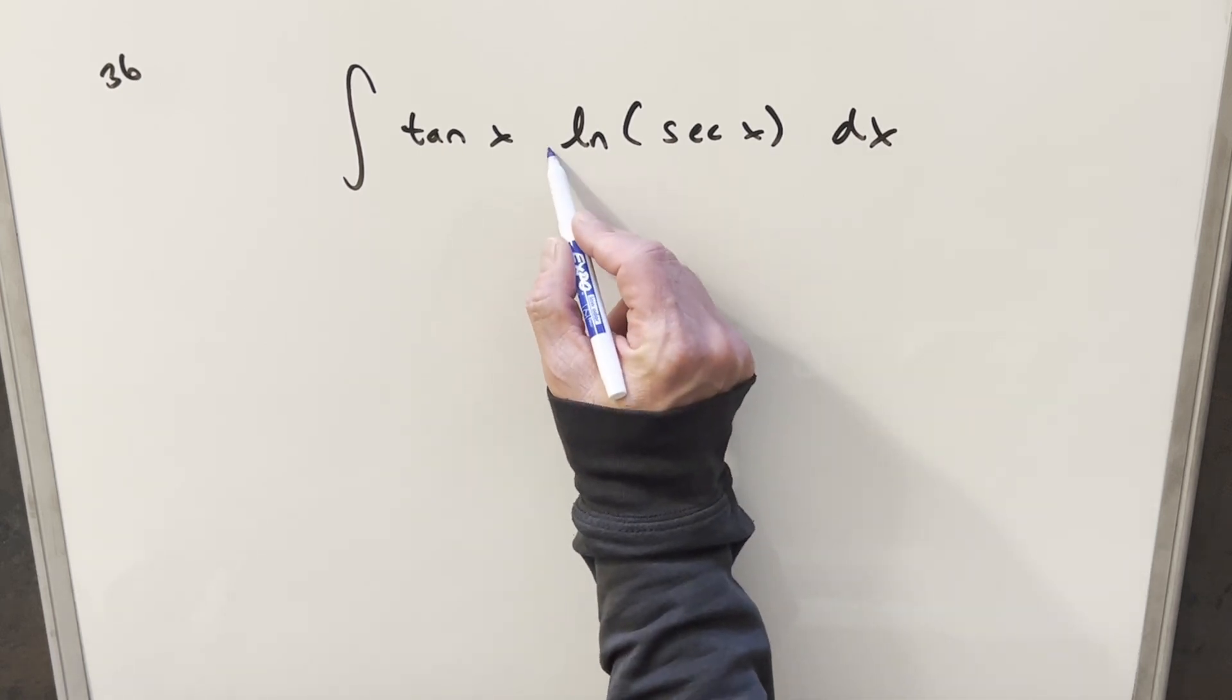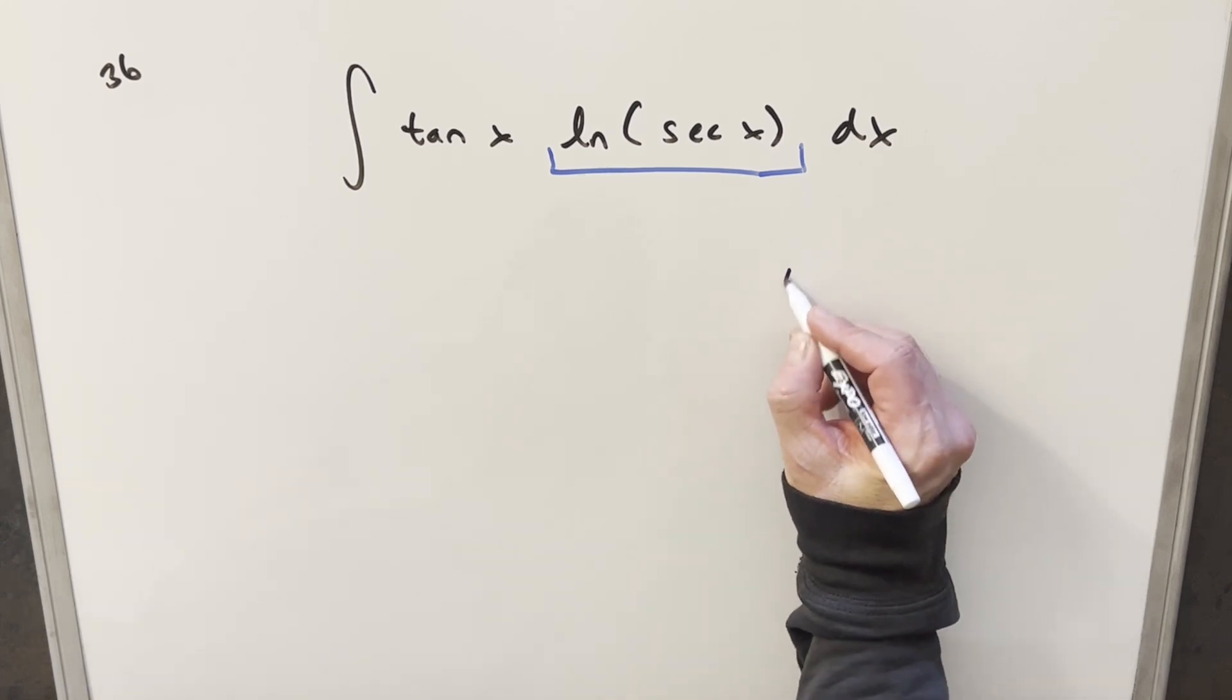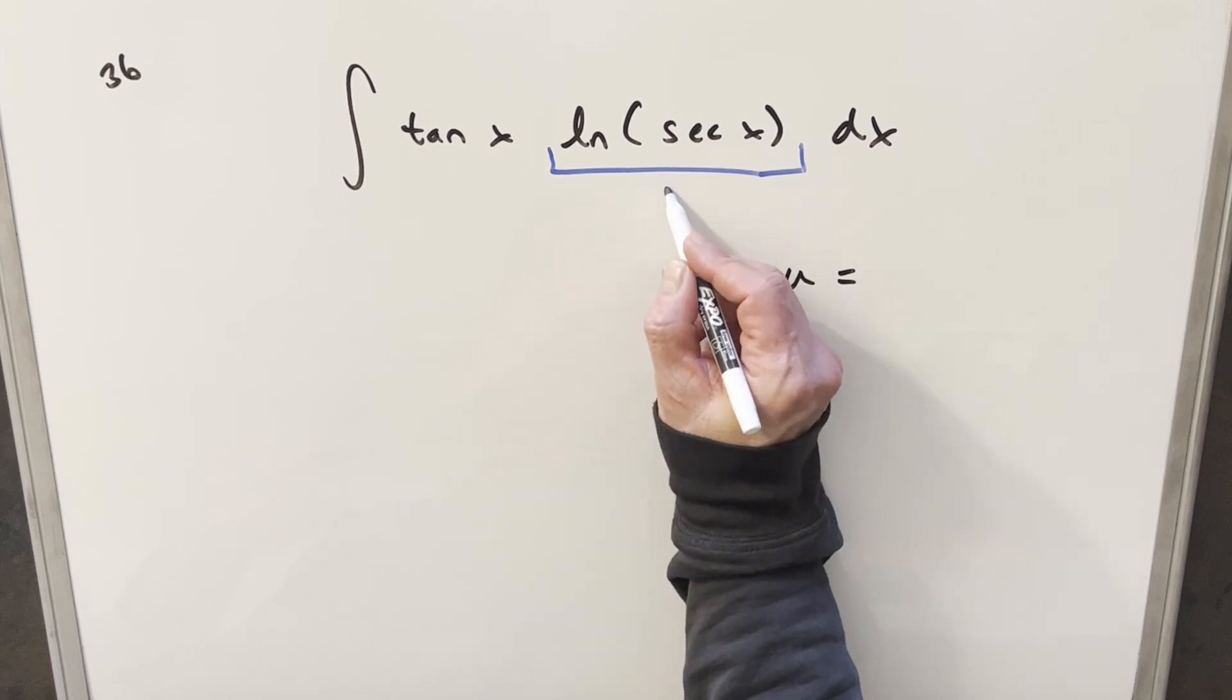The first thing I want to notice here is that we've got natural log inside of our integral. Oftentimes the best way to deal with natural log is with integration by parts, but sometimes u substitution is just as good, and I think what I'll do here is try a u substitution, making this here my u.